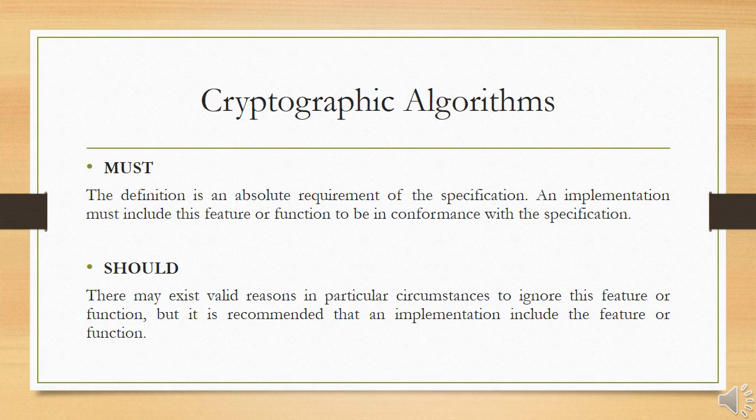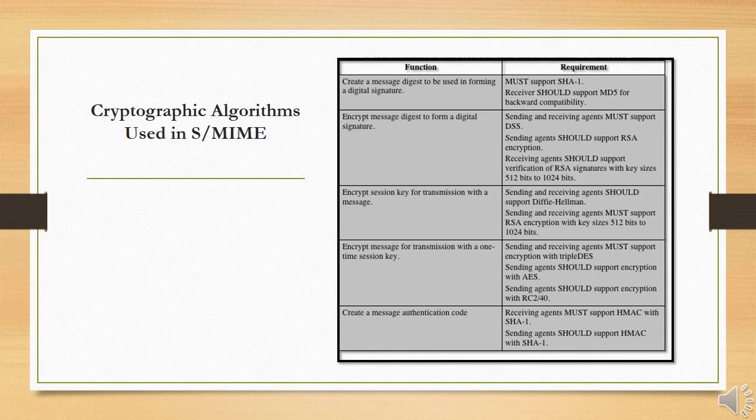The cryptographic algorithms comprise these two fields. The MUST field — the definition is an absolute requirement of the specification and implementation; must include this feature or function to be in conformance with the specification. The SHOULD field — there may exist a valid reason in particular circumstances to ignore this feature or function, but it is recommended that an implementation include the feature or function.